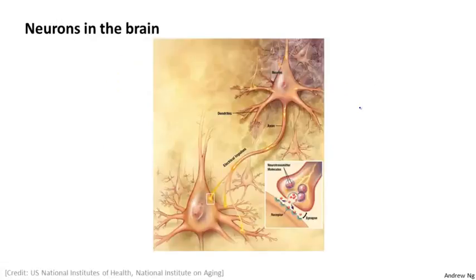Here's an illustration of a group of neurons. The way that neurons communicate with each other is with little pulses of electricity. They're also called spikes, but that just means a little pulse of electricity. So here's one neuron, and what it does is, if it wants to send a message, it sends a little pulse of electricity via this axon to some different neuron.